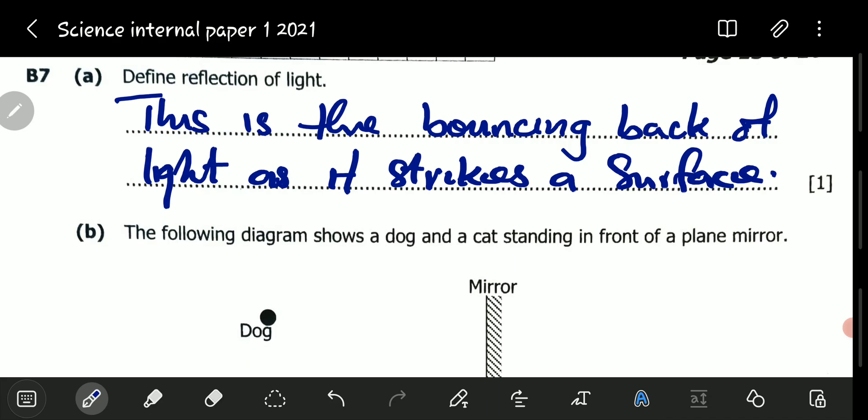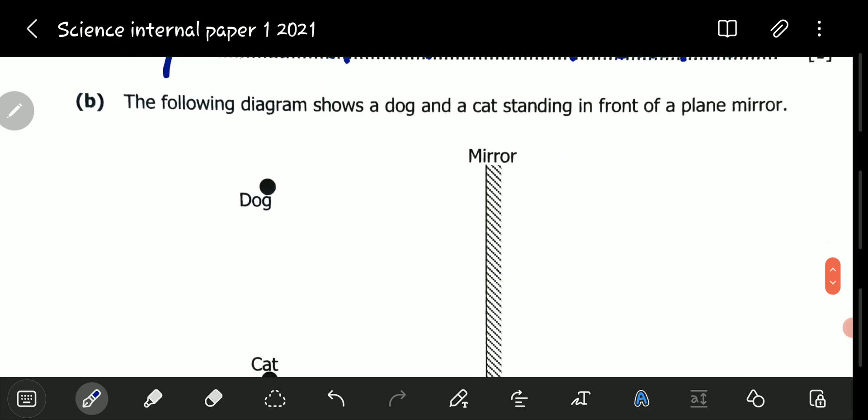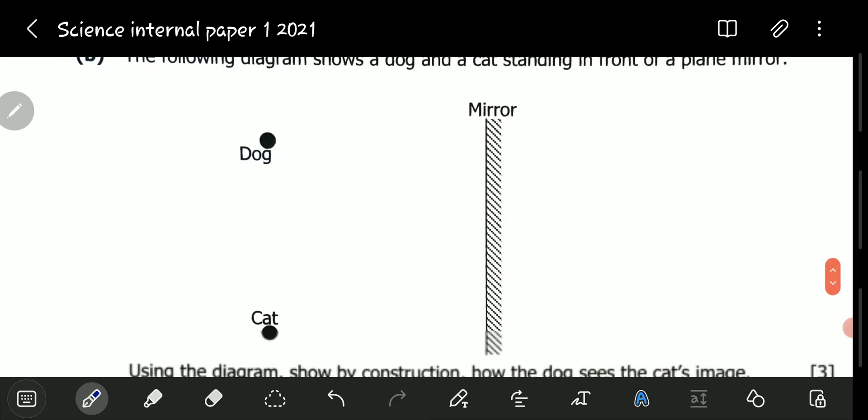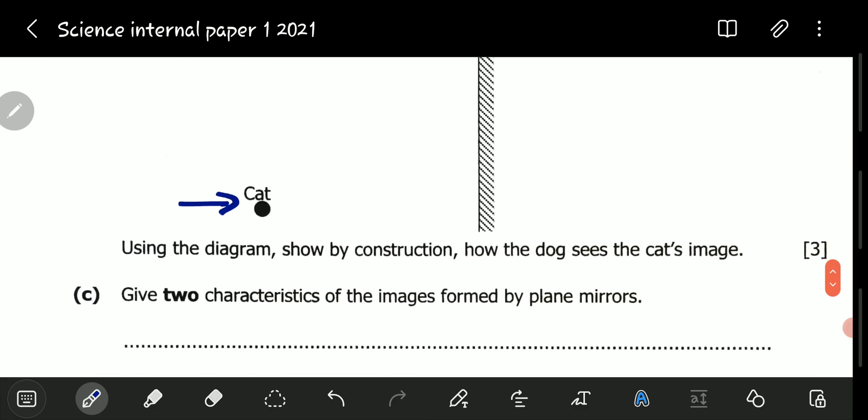Let's proceed to question B. The following diagram shows a dog and a cat standing in front of a plane mirror. Here is our cat, and we have our dog there, and our mirror right there.